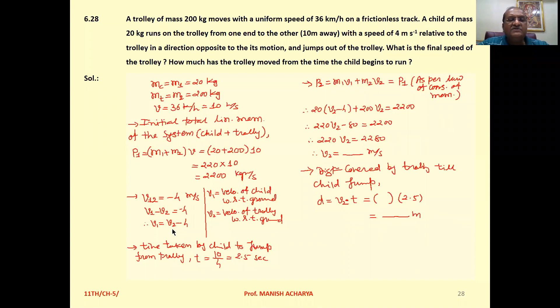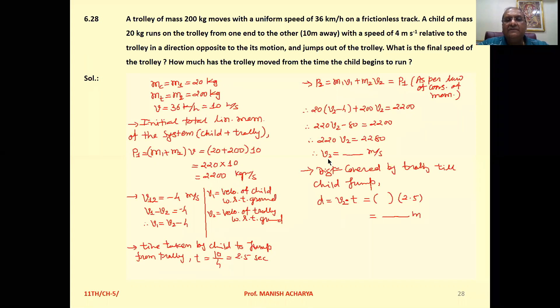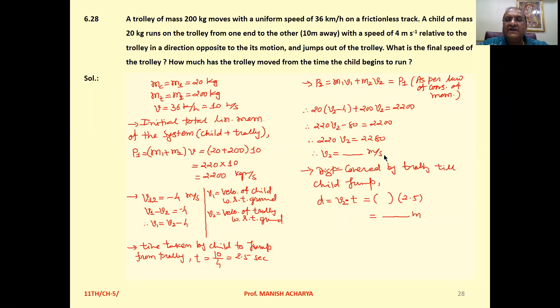But V1 = V2 - 4 as we derived. So 20(V2 - 4) + 200×V2 = 2200. Solving this gives V2 in meters per second.